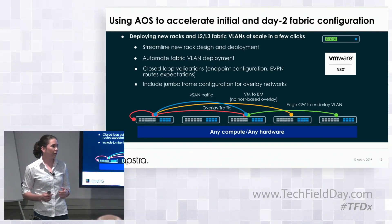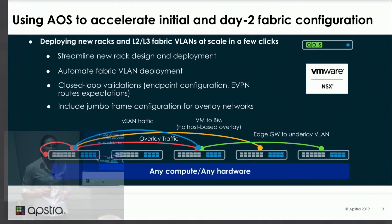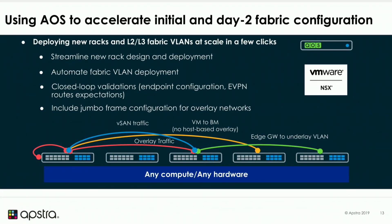In a couple of clicks, you can define how servers are connected to your leaf, how many uplinks you want, and how you want those links configured logically. Once your design is done, you just ask AOS to deploy it, and AOS automatically generates all the vendor-specific configuration. As Mansour explained, we are completely agnostic on hardware and support many different network operating systems. The user doesn't need to enter anything device-specific — it's really a high-level intent.